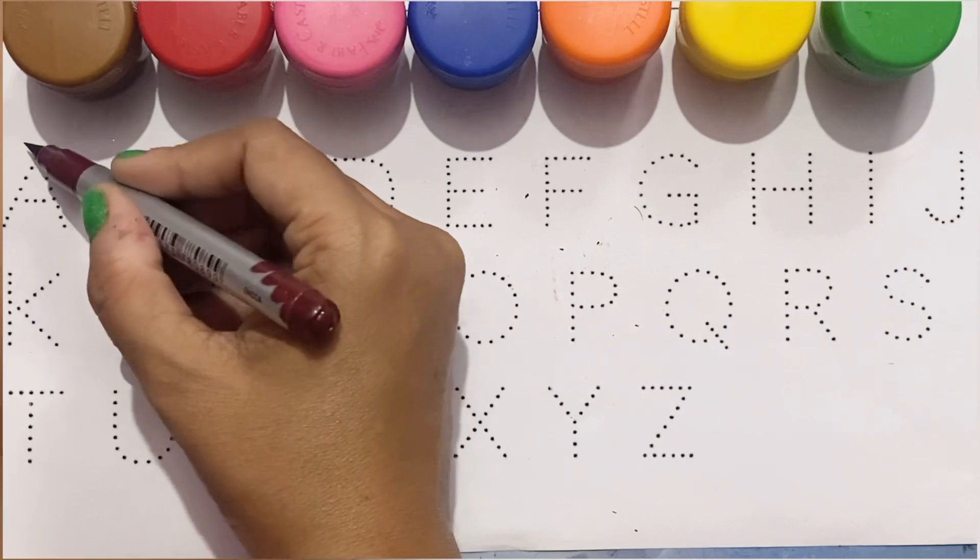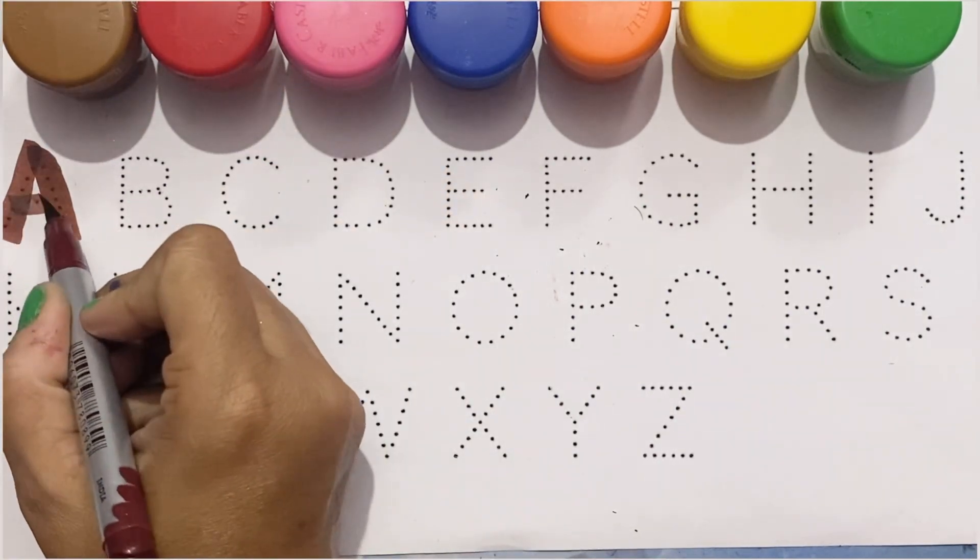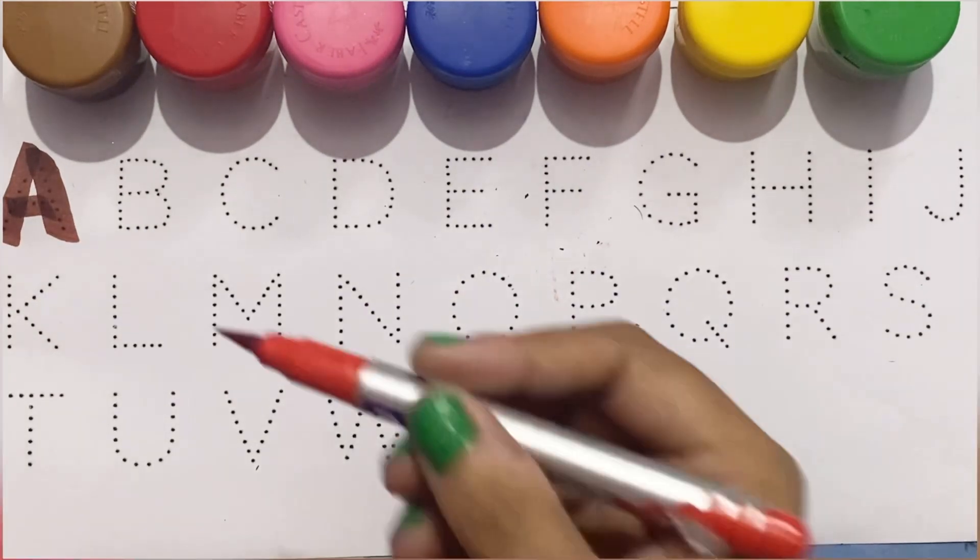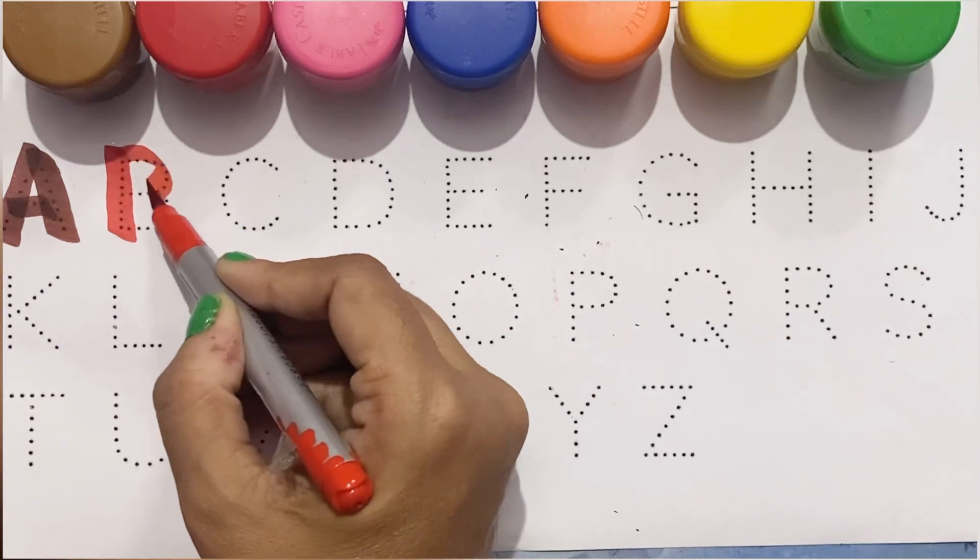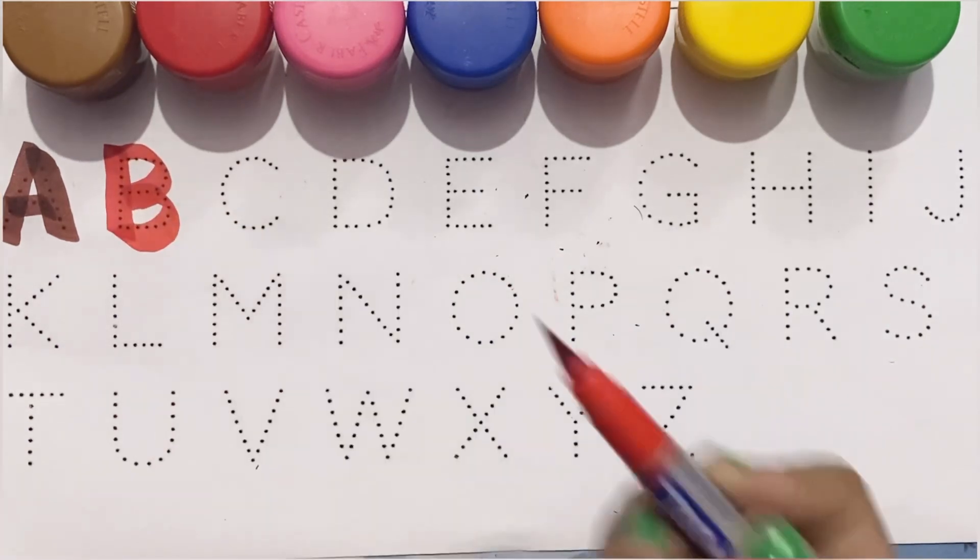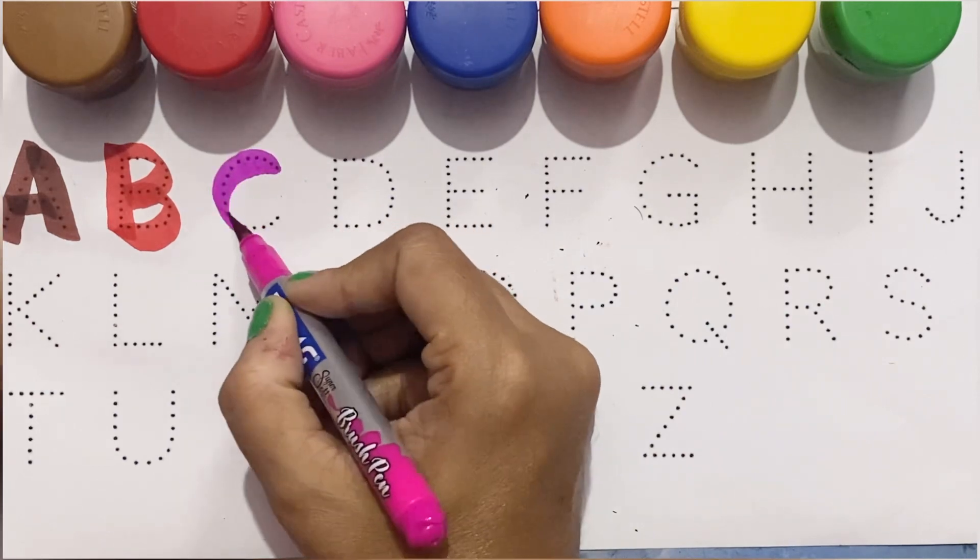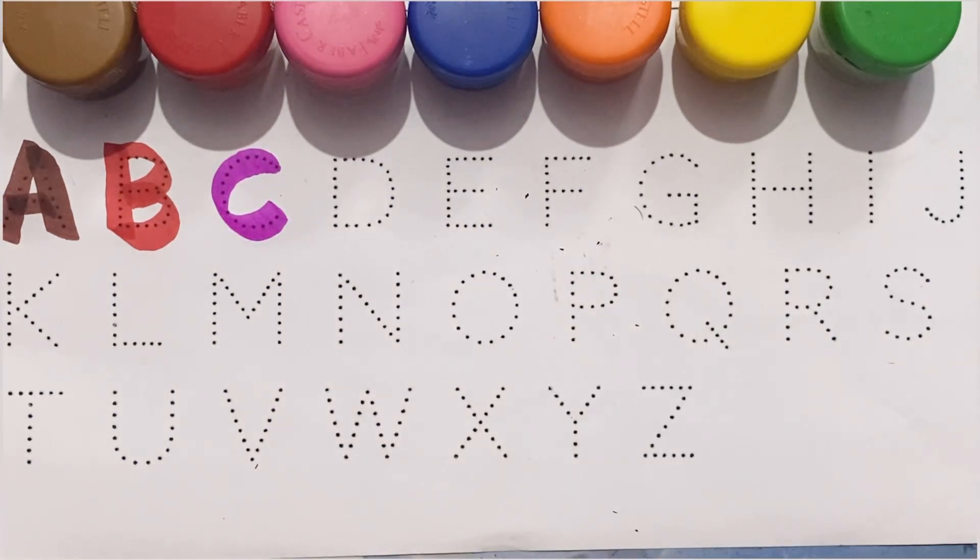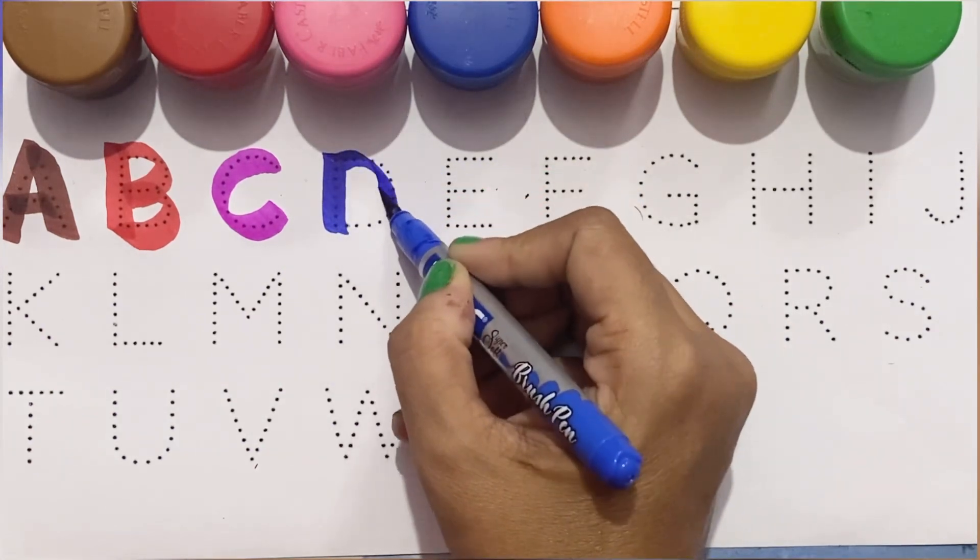Brown color, A for apple. Red color, B for ball. Pink color, C for cat. Blue color, D for dog.